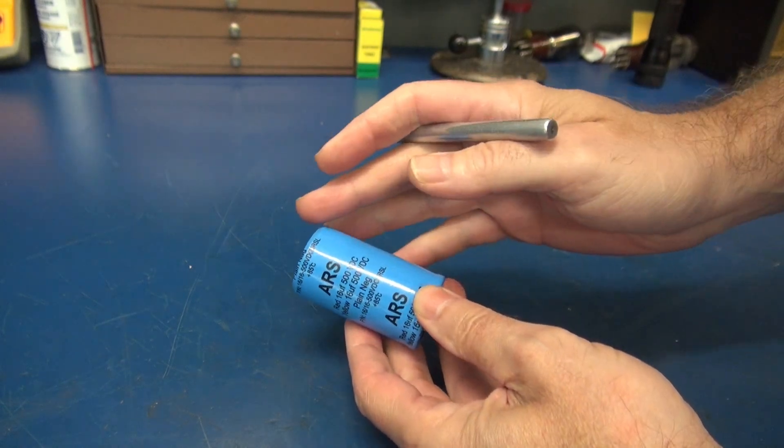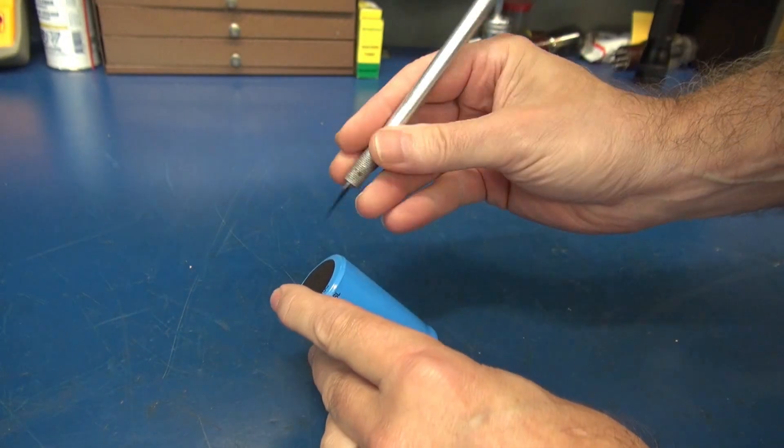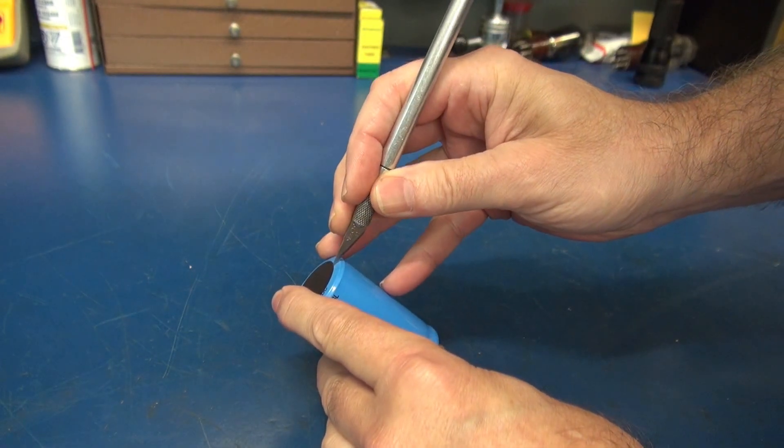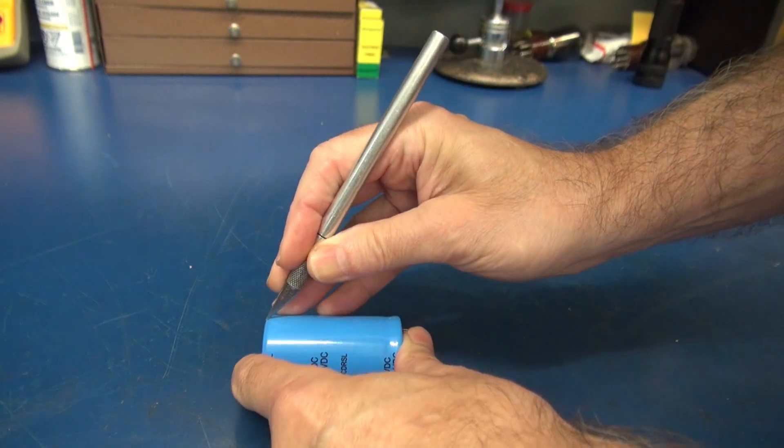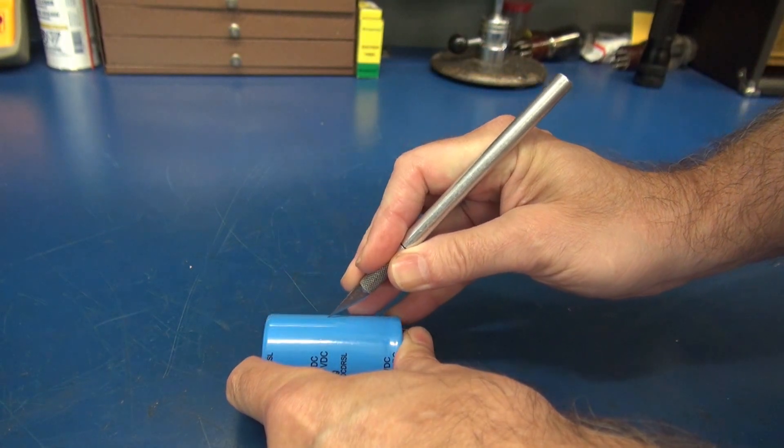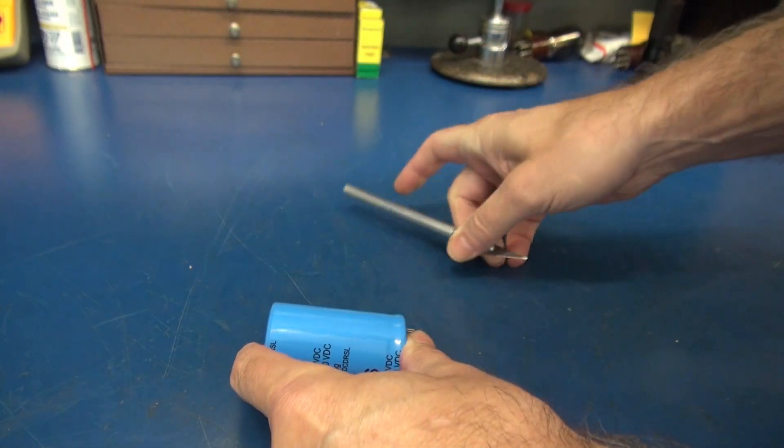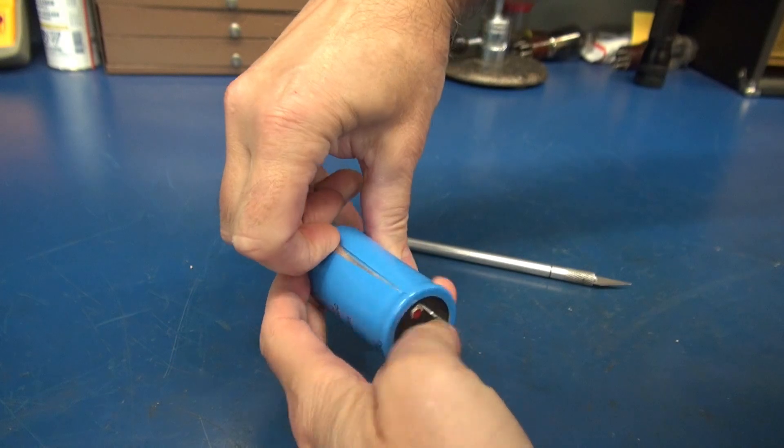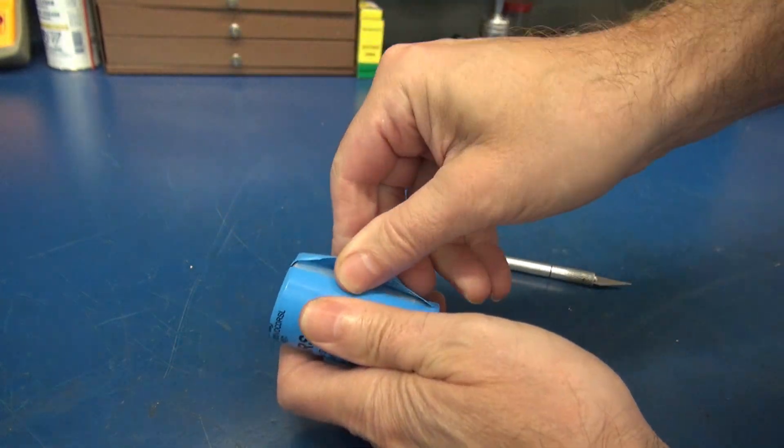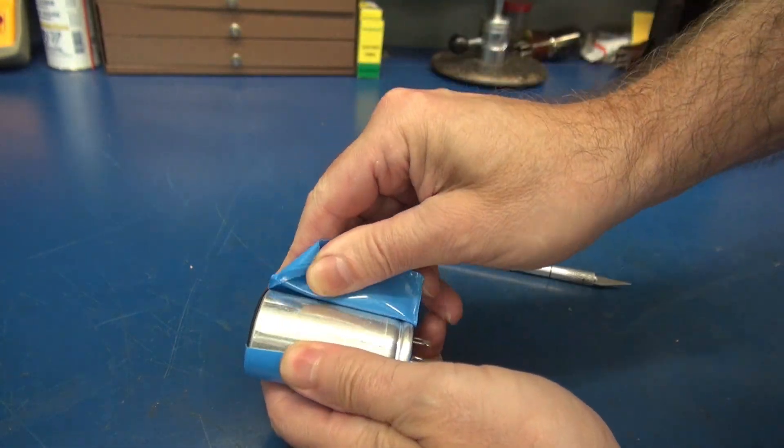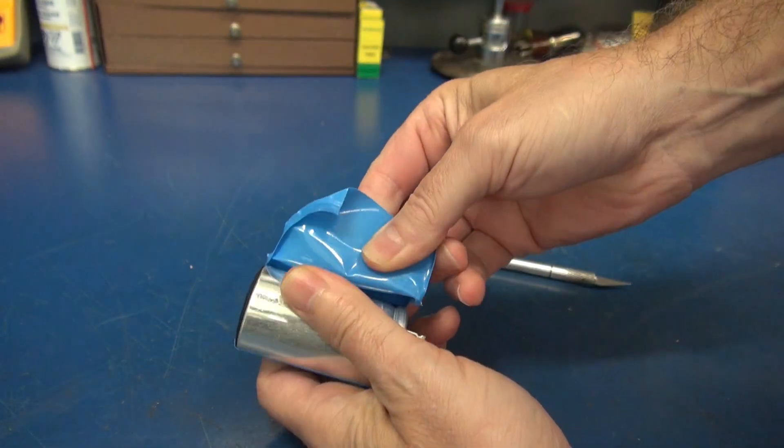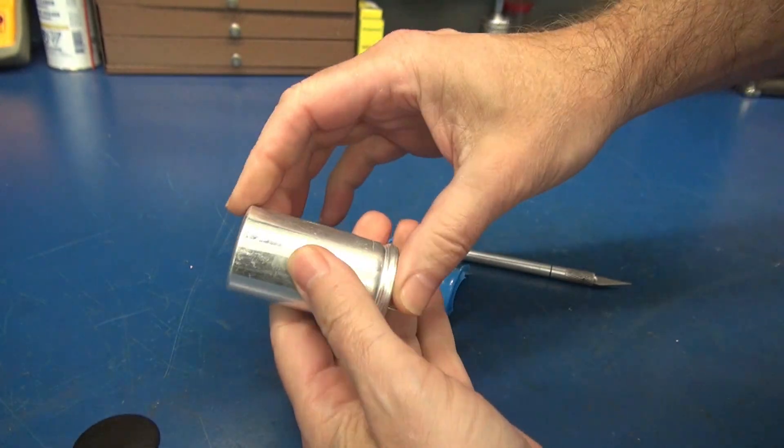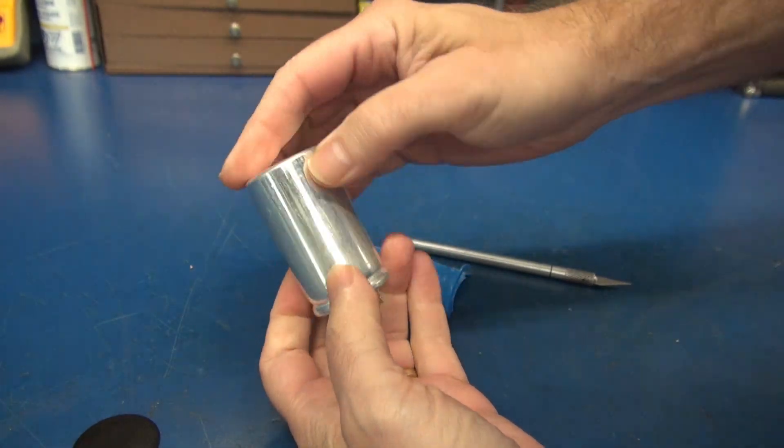So first, let's remove the heat shrink label and see if there's other information underneath of it. Here we go, peel off the heat shrink. Nope, it is an aluminum housing.